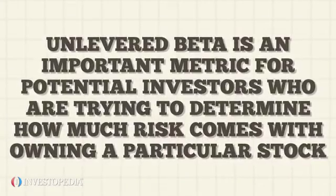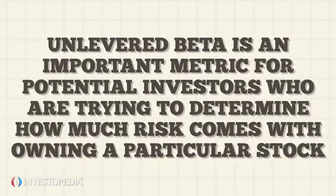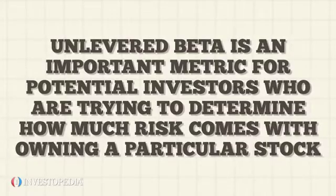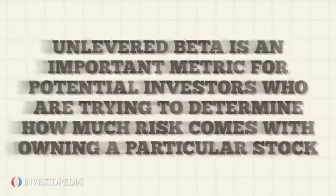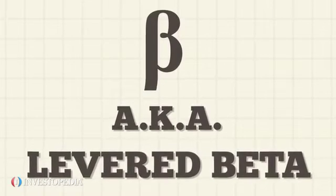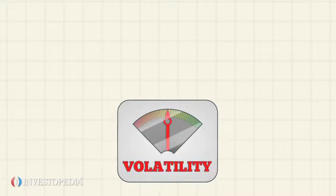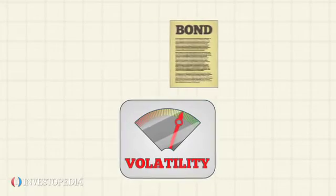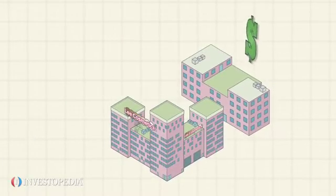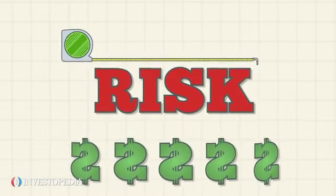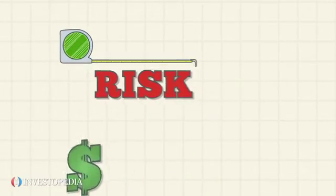Unlevered beta is an important metric for potential investors who are trying to determine how much risk comes with owning a particular stock. Beta, also known as levered beta, measures the volatility of a security compared to the market as a whole. Leverage is the amount of debt used to finance a company's assets. Therefore, unlevered beta is a measure of the risk of a company without any debt.